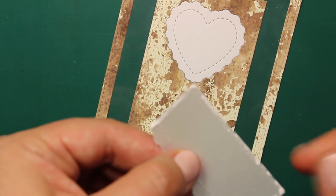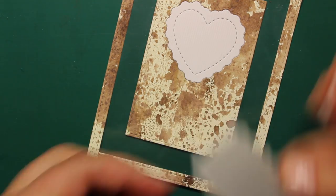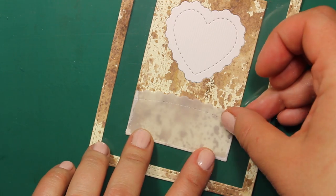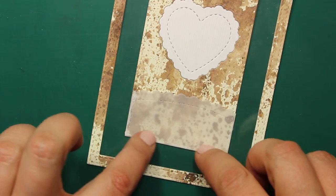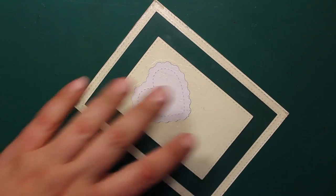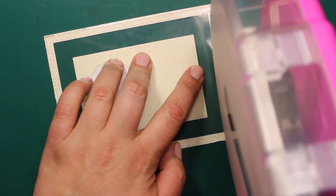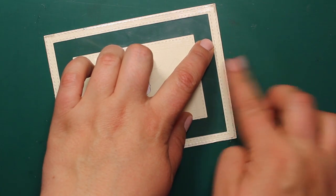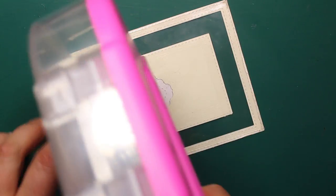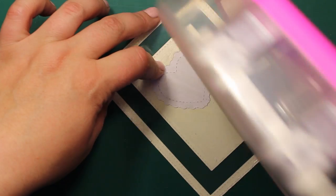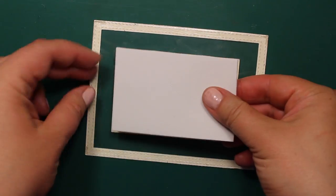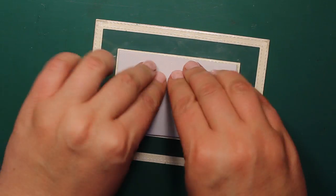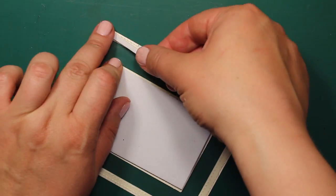When the glue dries, it will be totally invisible. To make a shaker frame, I'm applying tape adhesive again at the wrong side and then I'll be sticking some craft foam on top. You can use mounting tape instead, but in that case you'll need to apply two layers of it.